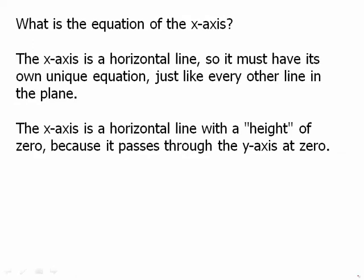Well, let's think about this. The x-axis is a horizontal line with a height of 0 because it passes through the y-axis at the origin. It passes through at (0, 0).